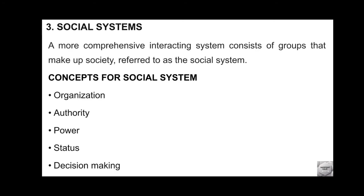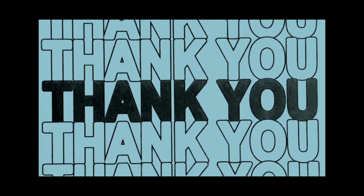Social systems — a more comprehensive interacting system, consists of groups that make up society, referred to as the social system. Ek group hai logo ka jo interact karte hain aapas mein aur milkar society banate hain. Social system ke concepts hain: organization, authority, power, status, and decision making. So this was all about Imogen King's Theory of Goal Attainment — hope you understood, thank you so much.